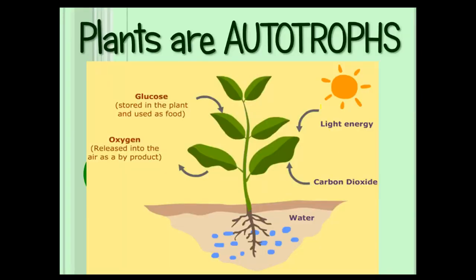Big picture: plants are autotrophs, meaning they can make their own food. They do this by taking in light energy, carbon dioxide, and water through the roots. In their leaves, they produce sugar and release oxygen. They store that sugar in their body and use some of it during cellular respiration so they can grow.